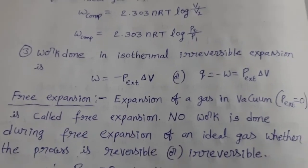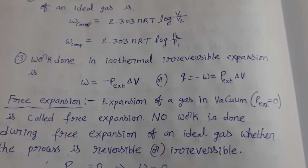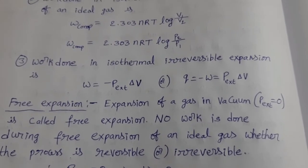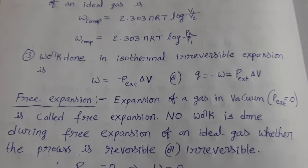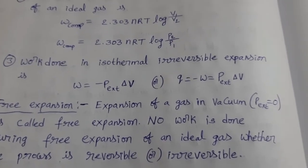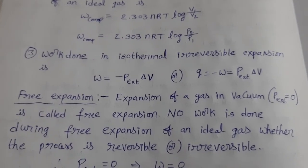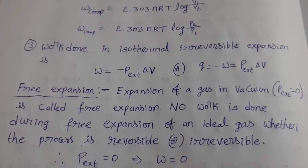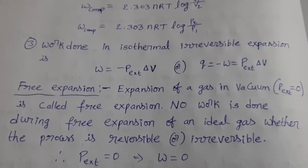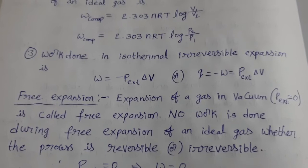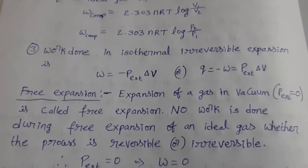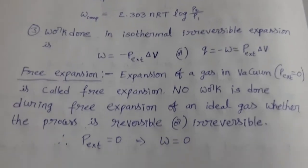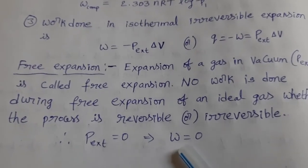Free expansion: expansion of a gas into vacuum is called free expansion. If a gas expands into vacuum, there is no pressure on that gas, so we consider external pressure is zero — P_external equals zero. No work is done during free expansion of an ideal gas, whether the process is reversible or irreversible. If P_external equals zero, then work done W equals zero.